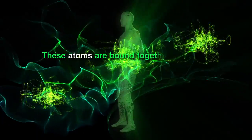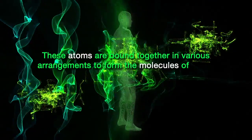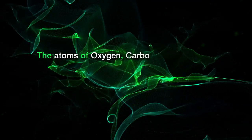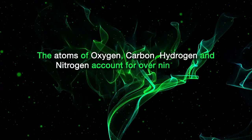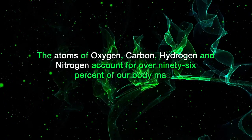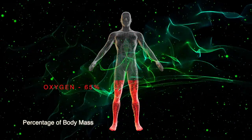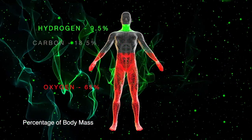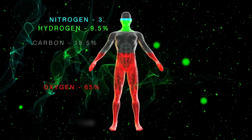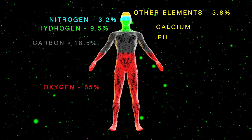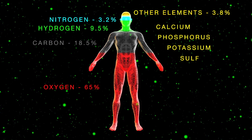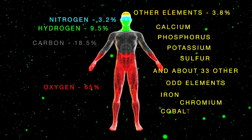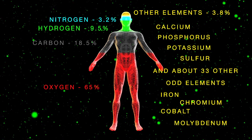These atoms are bound together in various arrangements to form the molecules of which all humans are composed. The atoms of oxygen, carbon, hydrogen, and nitrogen account for over 96% of our body mass. Oxygen accounts for about 65%, followed by carbon at 18.5%, hydrogen at 9.5%, and nitrogen at 3.2%. Throw in some calcium, phosphorus, potassium, sulfur, and about 33 other odd elements, ranging from iron to chromium, to cobalt, to molybdenum, and you have the makings of a human being.